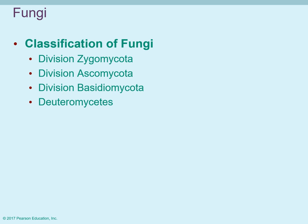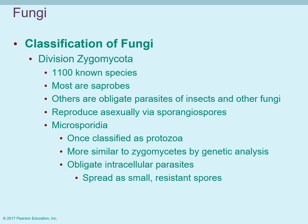In classification of fungi, DNA technology has changed where some fungi are placed. There are four divisions. Mycology is the study of fungi. For some reason, mycologists historically divided fungi into divisions instead of phyla, but they are essentially at the same level as a phylum in the animal kingdom. The four divisions are: Zygomycota, Ascomycota, Basidiomycota, and Deuteromycetes.